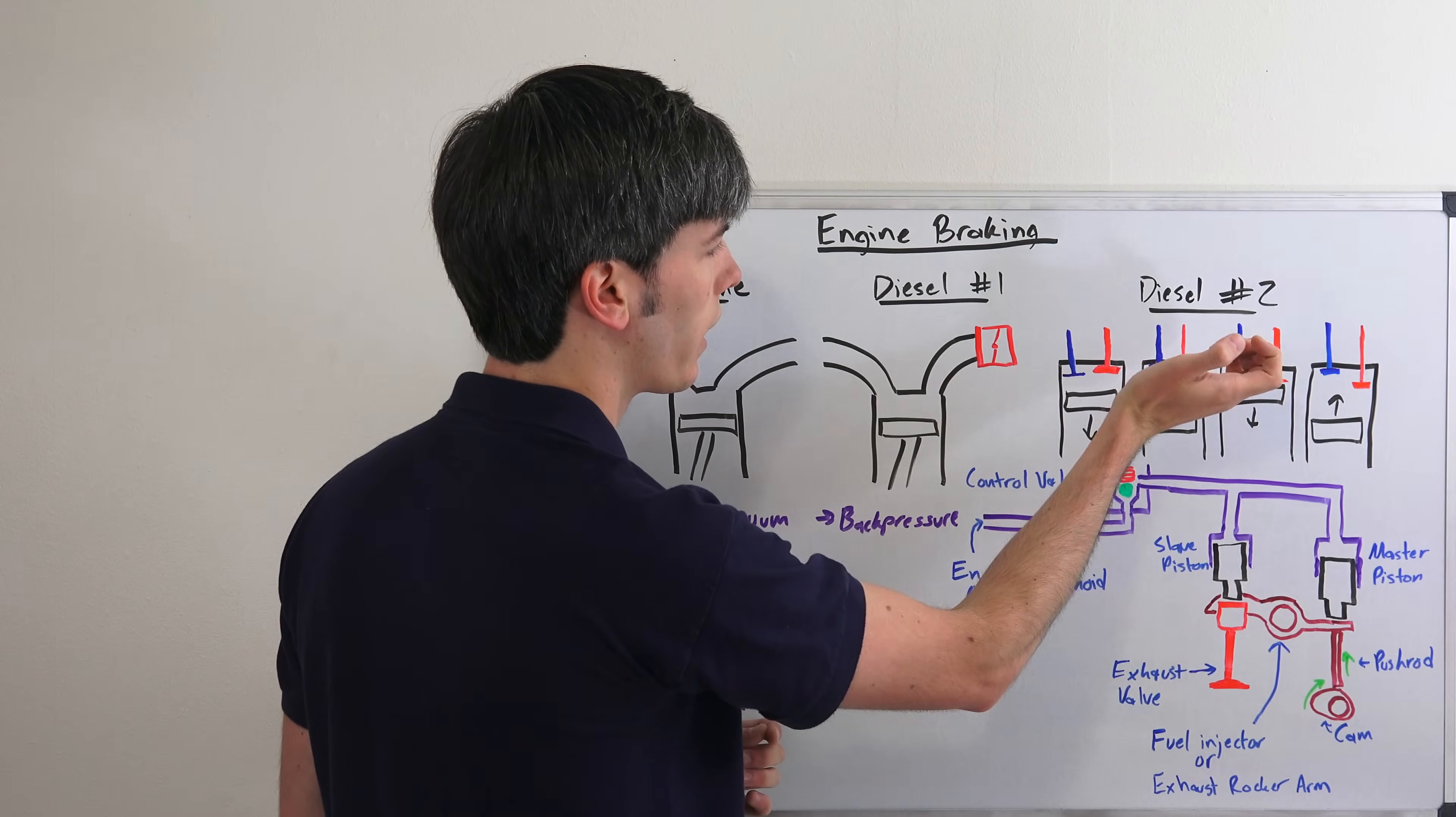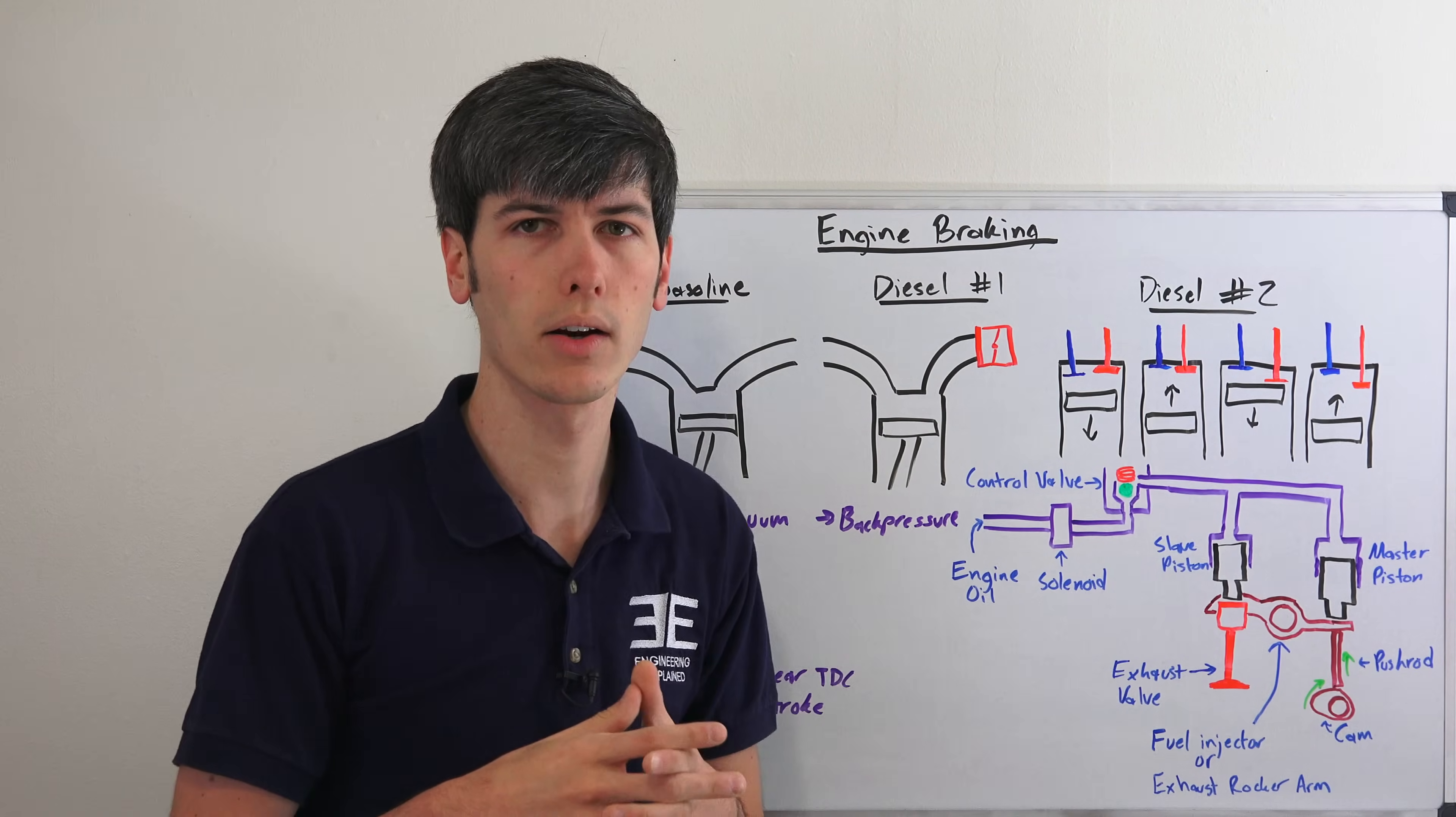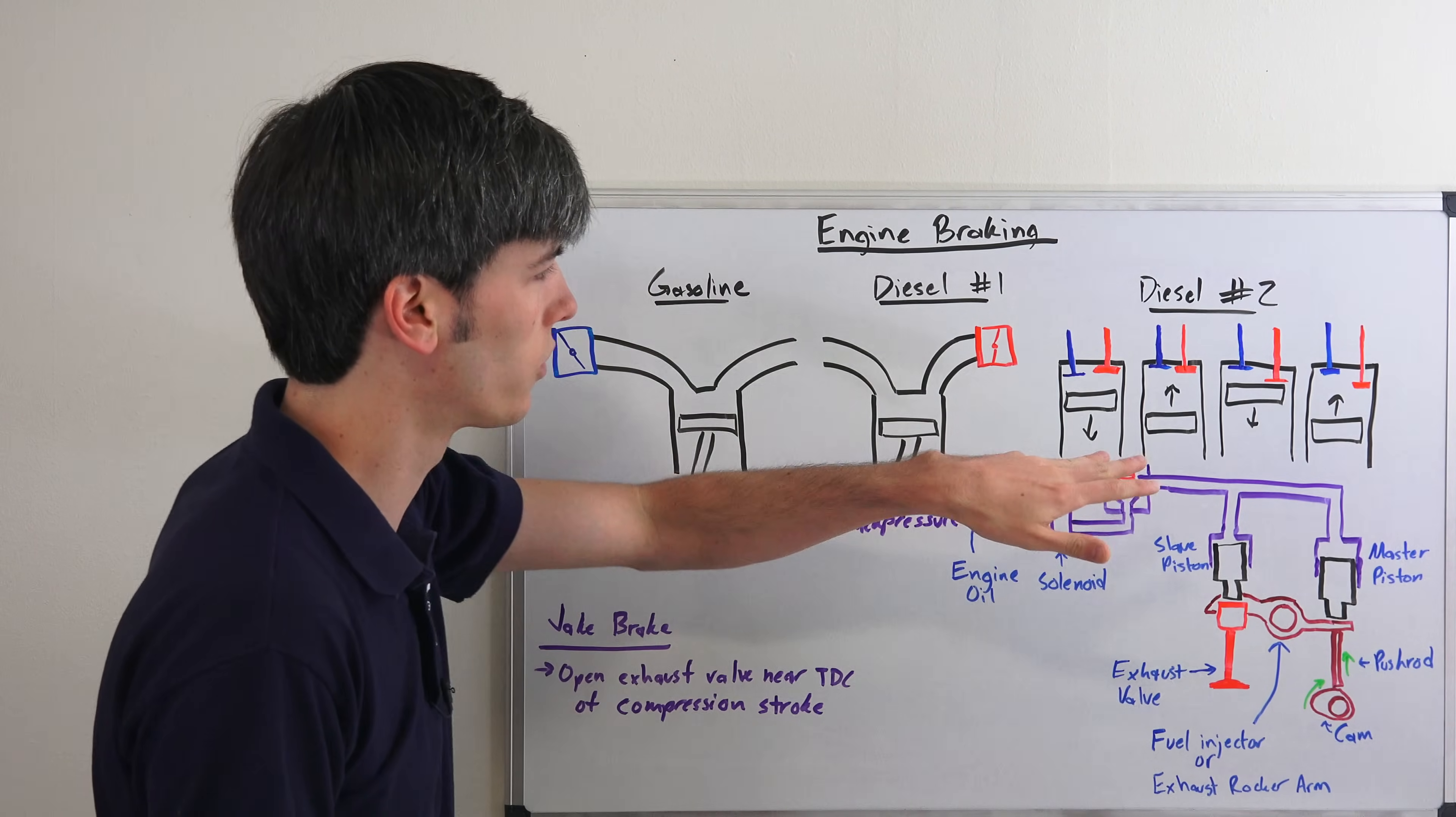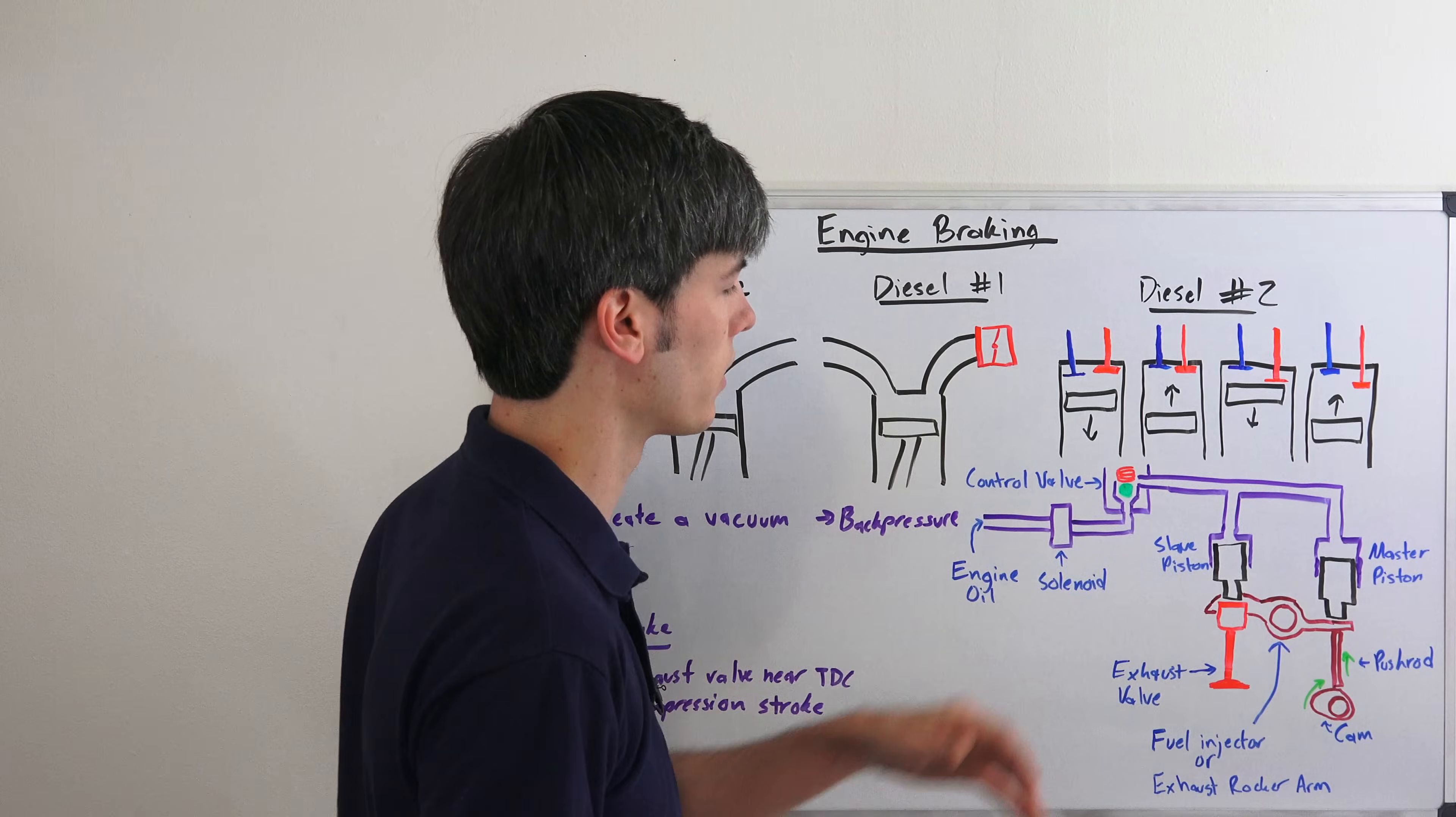You've compressed all that air and then you're just letting all of it escape. In doing so you're wasting energy. Basically you've turned your engine into an air compressor that's just sending that compressed air out the exhaust. So it's doing work but not useful work and that's just slowing your vehicle down. And then your exhaust stroke will happen like normal.